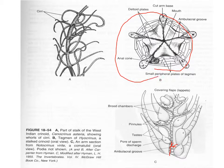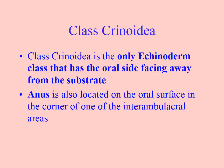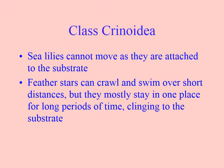They've got a two-way gut — they don't have a mouth and an anus. This is the only echinoderm class that has the oral side facing away from the substrate, and the anus is also located on the oral surface. Sea lilies can't move because they're attached, and feather stars can crawl and swim, but mostly stay in one place. Often you'll find their calyxes down within a crack or crevice in the rocky shore substrate, with only the arms sticking out.